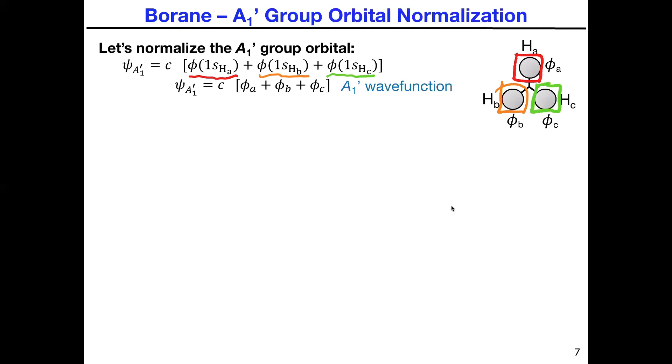To simplify all of this terminology, I decided to use phi A and phi B and phi C as shorthands for this more complex looking mathematical expression. So in the end, we have this wave function with a coefficient in front of it, and then we basically have the sum that we determined from the analysis we did from generating the group orbitals through the projection operator method.